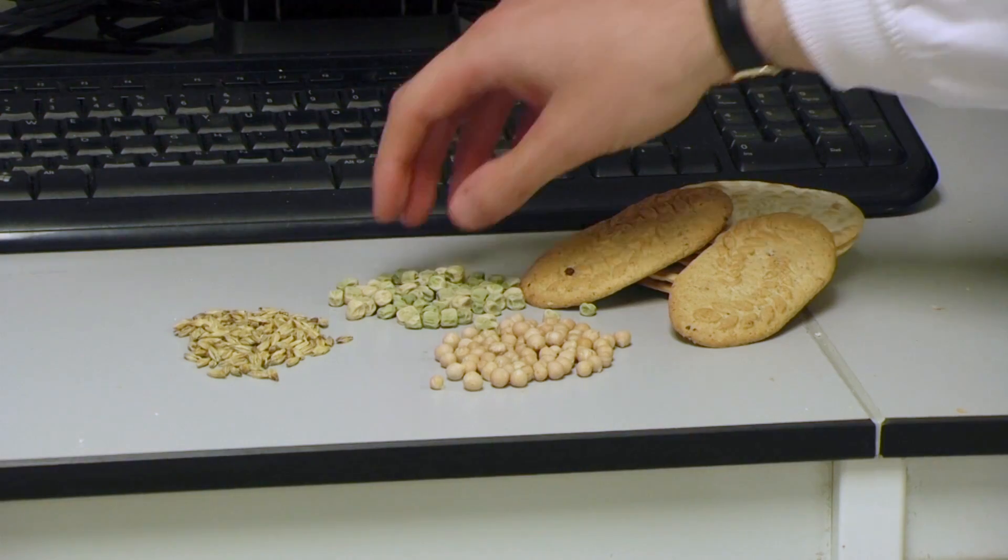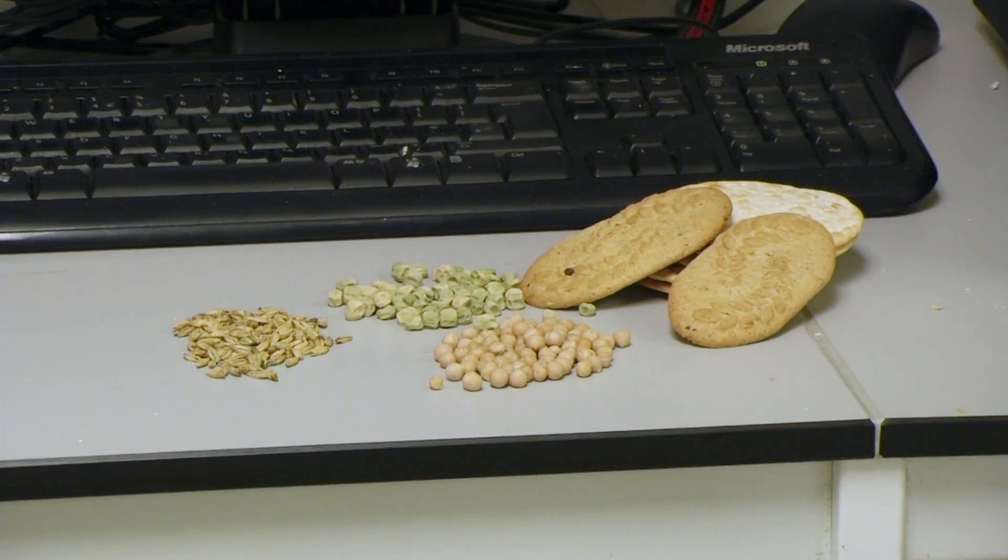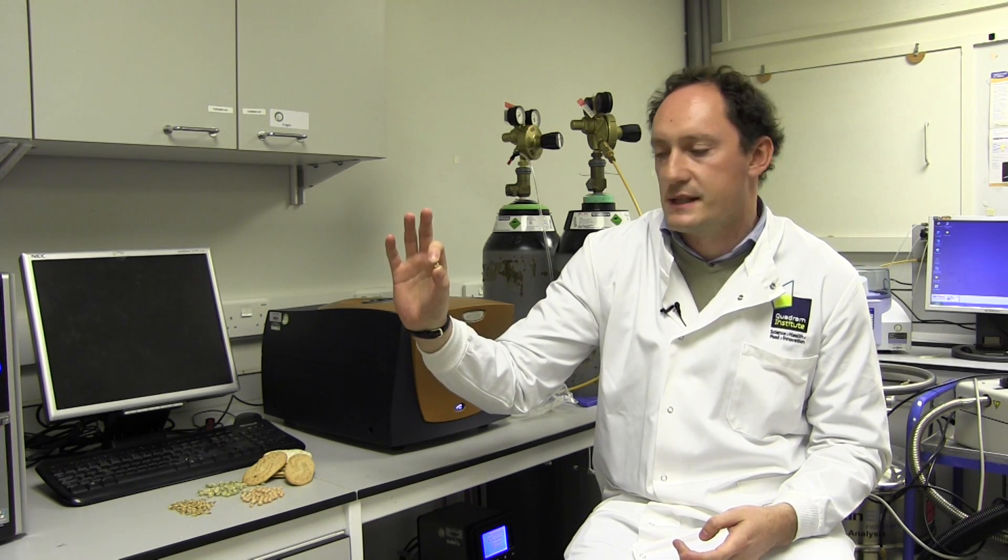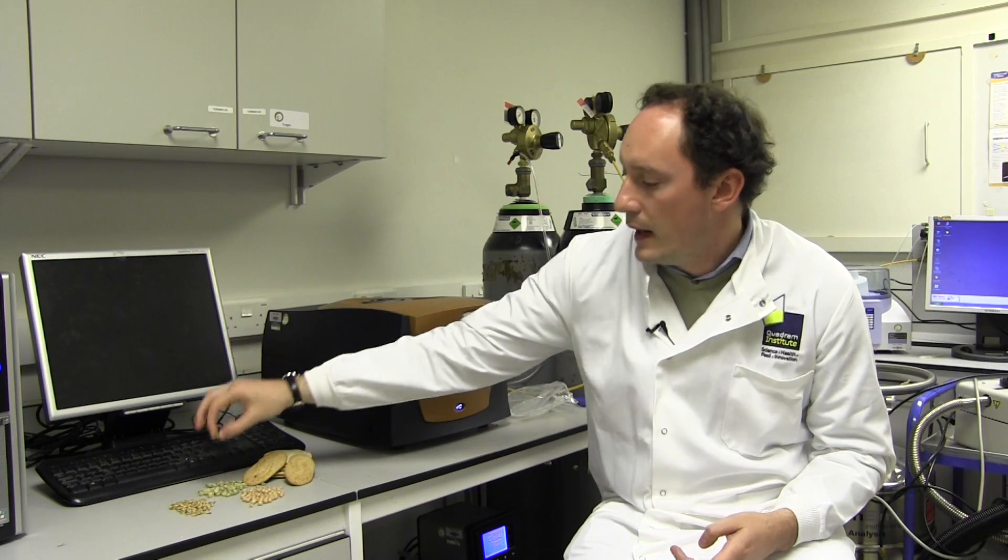A couple of recent examples we've been working with is the wrinkled pea. This is the mutation which was famously studied by Gregor Mendel. We've more recently discovered that it's a mutation in a starch branching enzyme which gives rise to starch which is much more firmly resistant to thermal processing and therefore has much slower digestion properties.